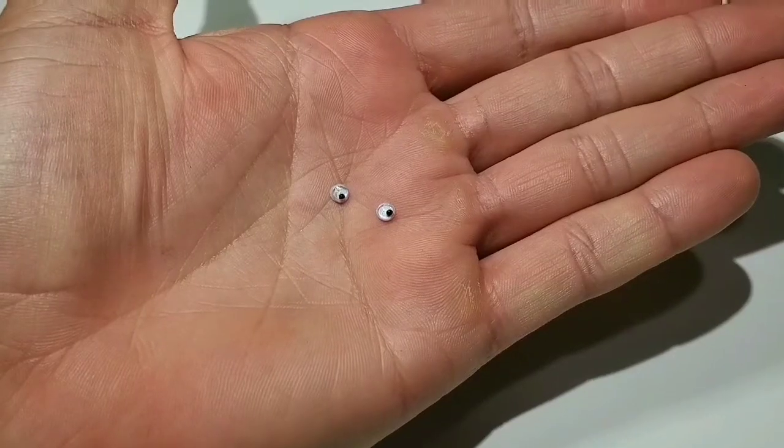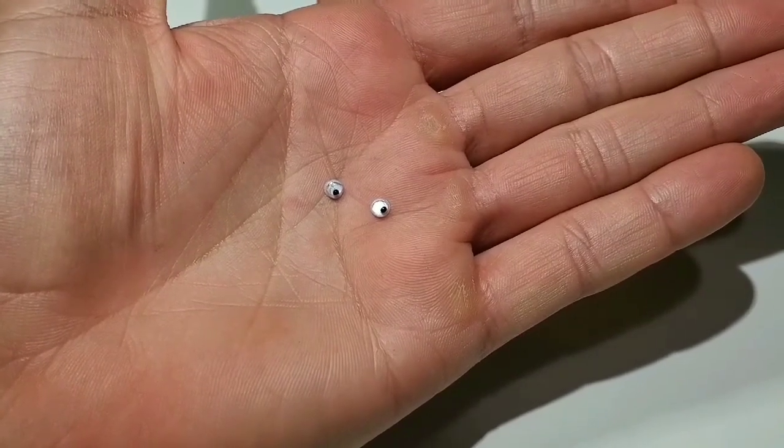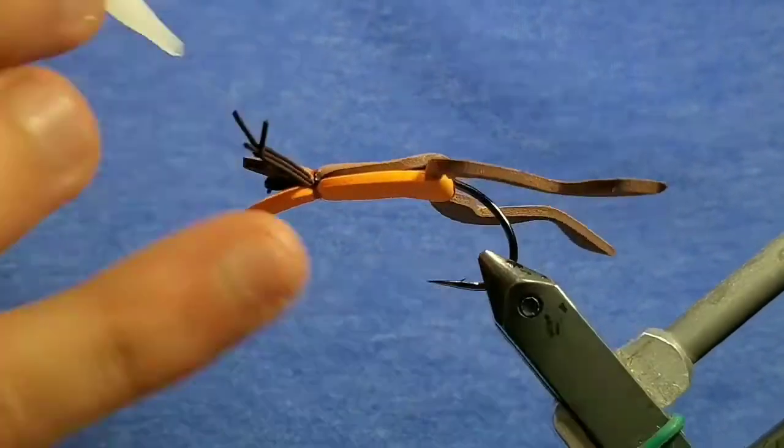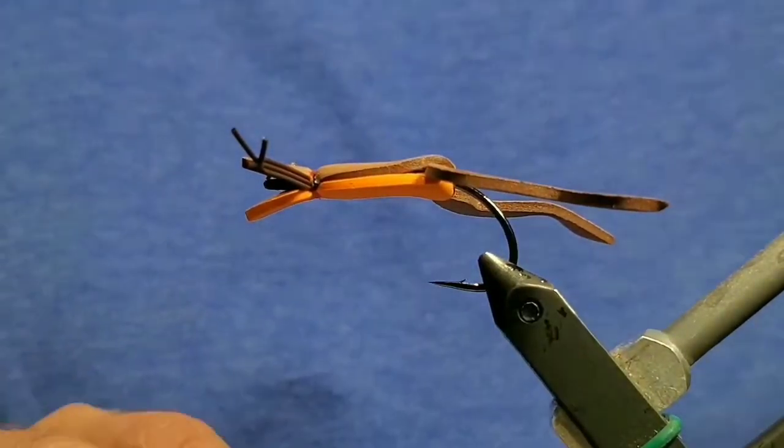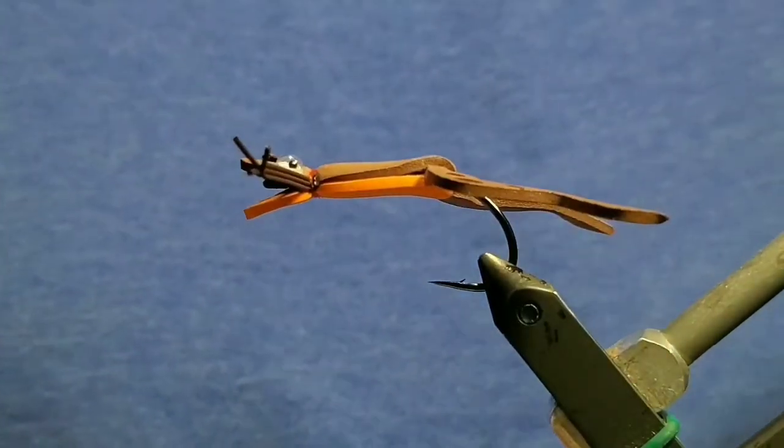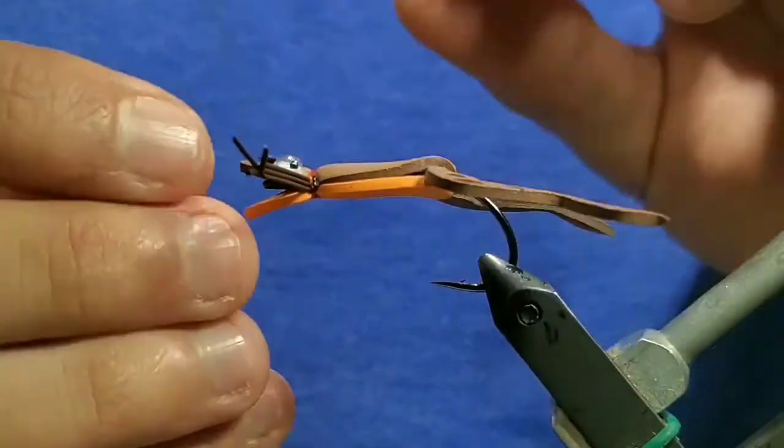Now go to some small googly eyes. Place two drops of super glue, one on each side towards the back of the head on the piece of brown foam. Place an eye on each drop and press it down to set the glue. Once the glue is set, the fly is ready to be fished.